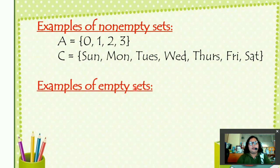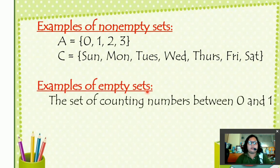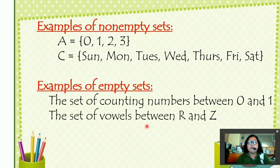Let us now have examples of Empty Sets. The set of counting numbers between 0 and 1. The numbers between 0 and 1 are not counting numbers. They could be fraction or decimals. So that is why it is an empty set. The set of vowels between R and Z. The letters between R and Z are consonants, not vowels. So that is why it is an empty set.